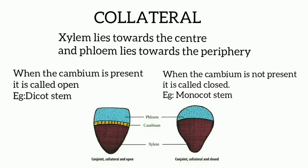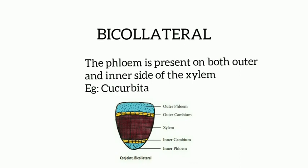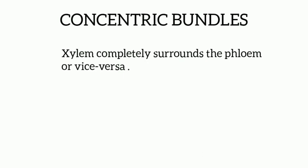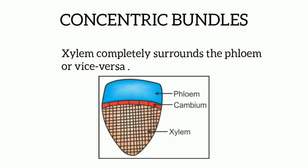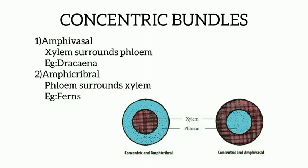Cambium is a tissue layer responsible for plant growth. Next, we move on to bi-collateral. In this type of bundle, the phloem is present on both the outer and inner side of the xylem. The example is Cucurbita. Next, we have the concentric bundles. The vascular bundle in which the xylem completely surrounds the phloem or vice versa is called a concentric vascular bundle. Here you have two types: amphivasal and amphicribal. In amphivasal type, the xylem surrounds the phloem. When the phloem surrounds the xylem, it is called amphicribal type. The example for amphivasal is Dracaena and for amphicribal the example is ferns.